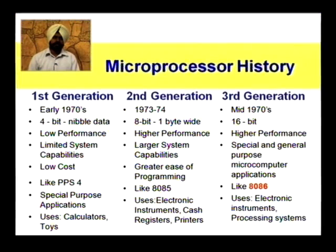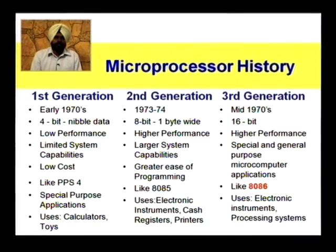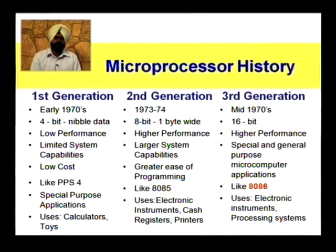Before starting with the architecture, if we briefly look at the history of microprocessors: 8086 falls in the third generation of microprocessors. All generations starting from the first generation were introduced in early 1970s. It started with 4-bit microprocessors — we had the 4004 microprocessor and the PPS4 microprocessor. Their performance was low, they had limited system capabilities, but they were cheaper and were made for calculators and toys. They are still used for calculators.